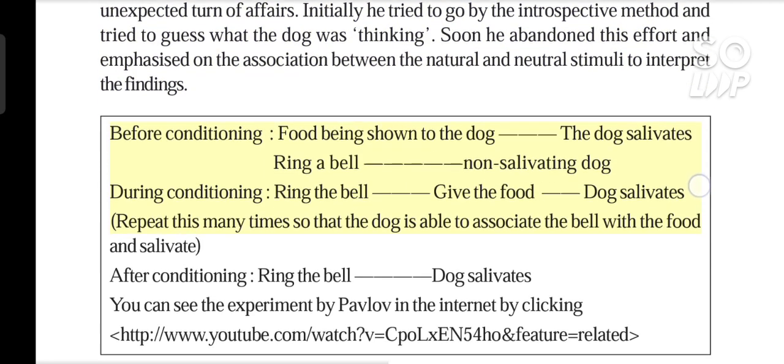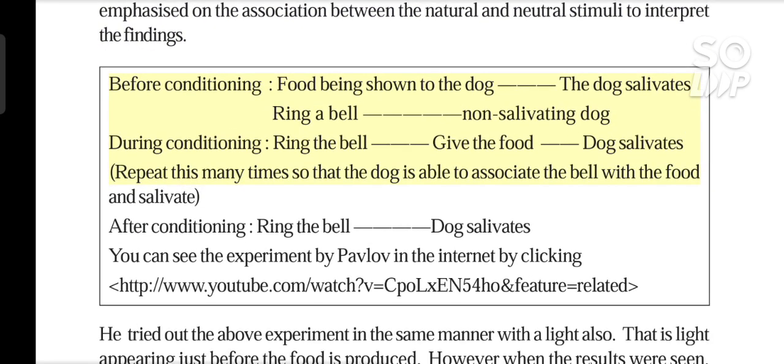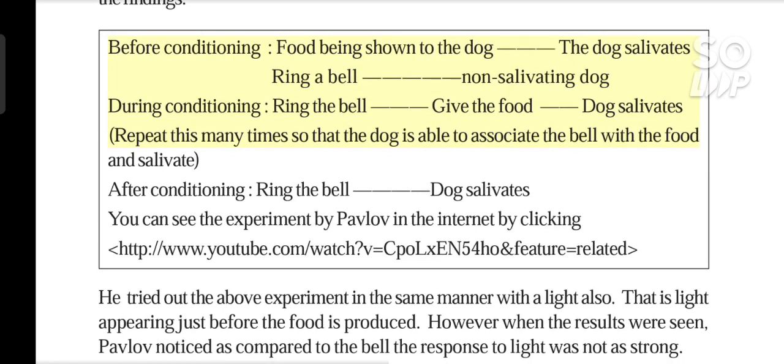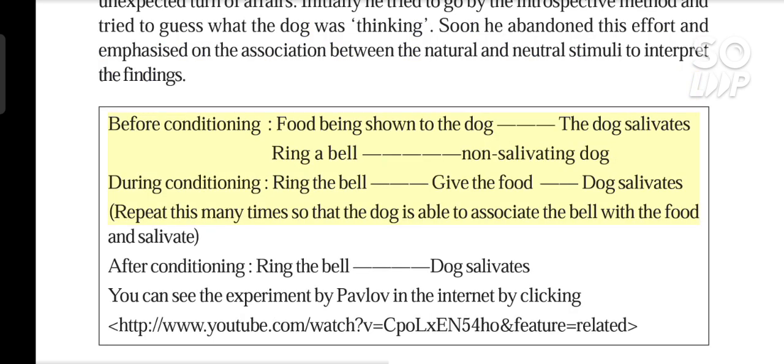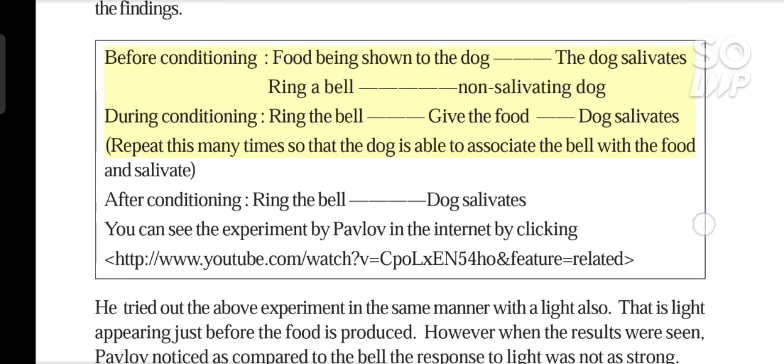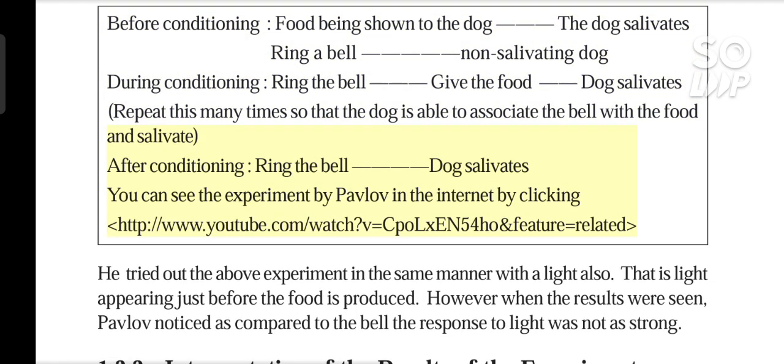Before conditioning: food being shown to the dog — the dog salivates. Ring a bell — non-salivating dog. During conditioning: ring the bell, give the food — dog salivates. Repeat this many times so that the dog is able to associate the bell with the food. After conditioning: ring the bell — dog salivates. You can see the experiment by Pavlov on the internet.